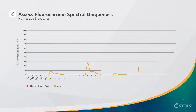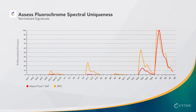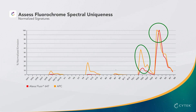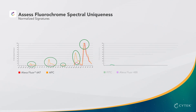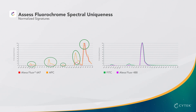Let's compare two dyes that are similar but still spectrally unique: APC and Alexa Fluor 647. They are both excited by the red laser but have slightly different peak emissions, and APC has more prominent secondary emissions from the other lasers. Next, let's compare FITC and Alexa Fluor 488, which are both excited by the blue laser and have nearly identical emission maxima, with only two minor differences in the secondary peaks of their normalized signatures.